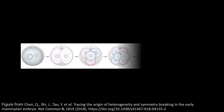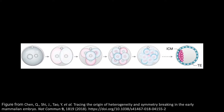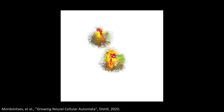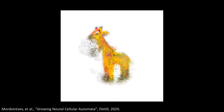Our solution is inspired by morphogenesis, the growth process that changes a simple cell into complex organisms. We use a model based on cellular automata that can learn to grow patterns from simple seeds.